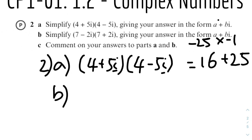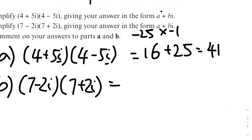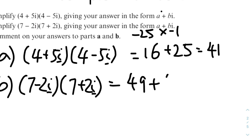Part B: simplify (7 − 2i)(7 + 2i). Using FOIL, the first term is 7 times 7 = 49. The second and third terms cancel: 7 × 2i = 14i and −2i × 7 = −14i, which cancel out. The last term is −2i times 2i: −2 times 2 is −4, and −4 times −1 (since i² = −1) gives +4. So the answer is 49 + 4 = 53.